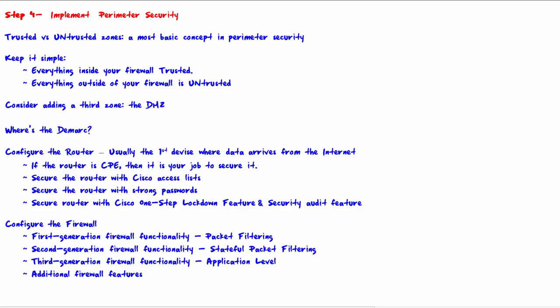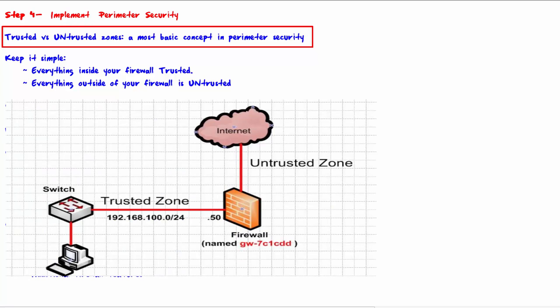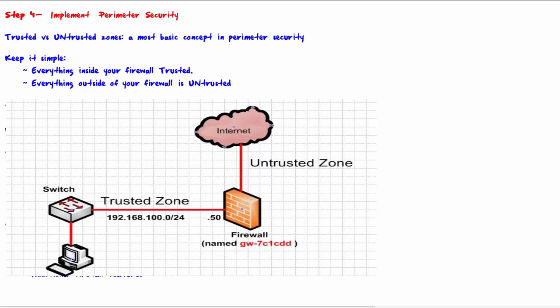Welcome to Step 4: Implement Perimeter Security — Trusted versus Untrusted Zones. The most basic concept in perimeter security is the trusted versus untrusted zones. The trusted zone is everything inside of your network, and the untrusted zone is anything outside of your network — that is, the internet. Best practice demands there will be only one point on the perimeter where data packets can pass in and out. A firewall is placed at this single point to stand at the border and regulate what is allowed in and what is allowed out. Everything inside your firewall is trusted; everything outside your firewall is untrusted.